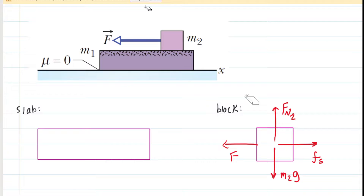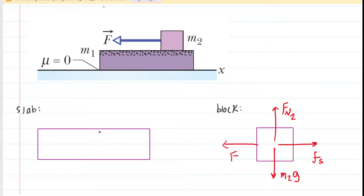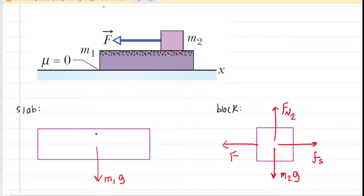We're assuming that it is a static frictional force rather than a kinetic frictional force, because we're assuming the block is not sliding along the top of the slab. So those would be the forces acting on the block. Let's turn to the slab next. We have the downward gravitational force acting on the slab, which is also M1, so that gravitational force would be M1 times G. We have the surface upon which the slab rests pushing up on the slab — that's a normal force, F sub N1.